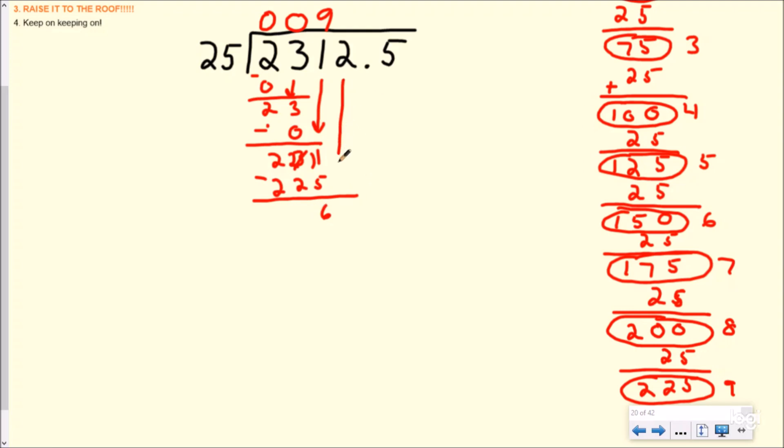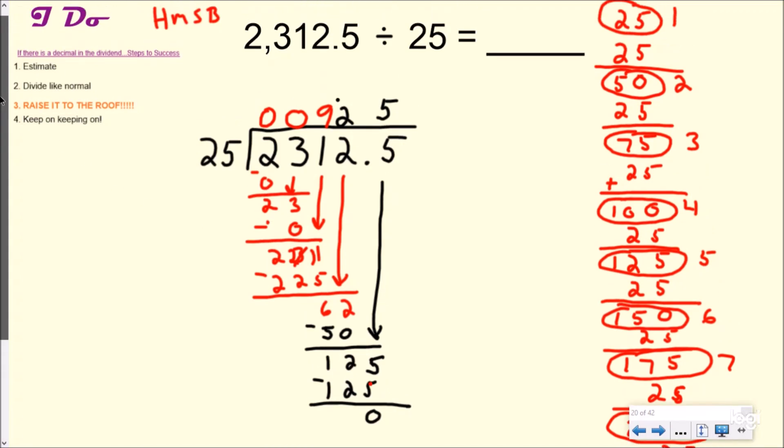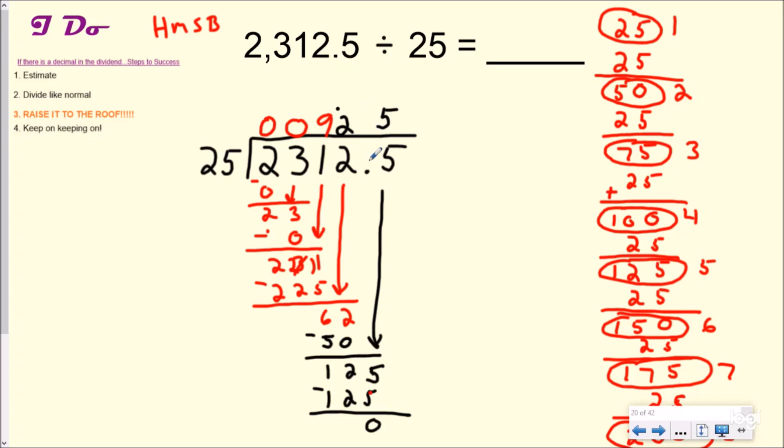That's going to be 6. And then I'm going to bring down my 2 and how many groups of 25 can go into 62? I can't fit three. But if I go back up a little bit, I can obviously fit two. And so 25 times 2 is 50. And so now I'm going to just subtract. I get 12. I bring down my 5 right here, and how many groups of 25 go to 125? Of course, that'd be five. I multiply that. That's 125. I subtract and I'm going to get zero, but I know I'm not done because I had a decimal in my dividend. And when it's in the dividend, I need to make sure I raise it to the roof.